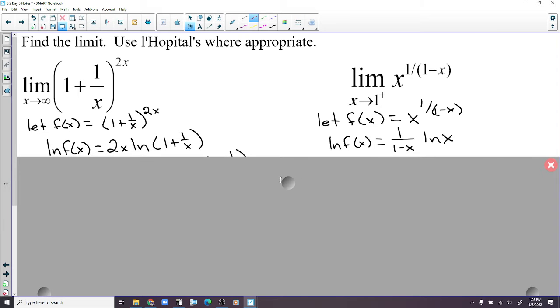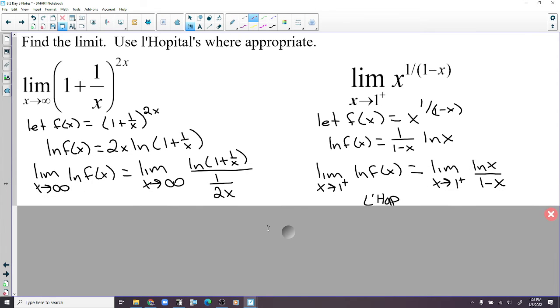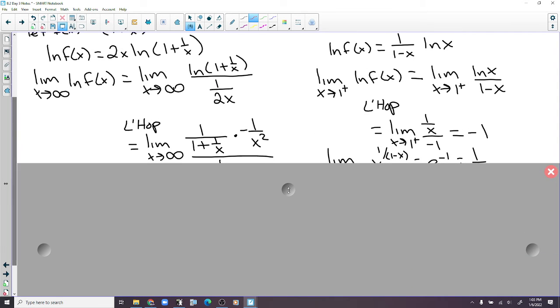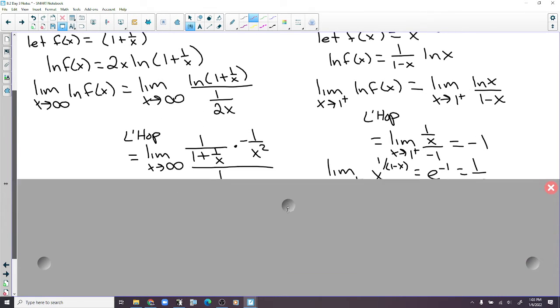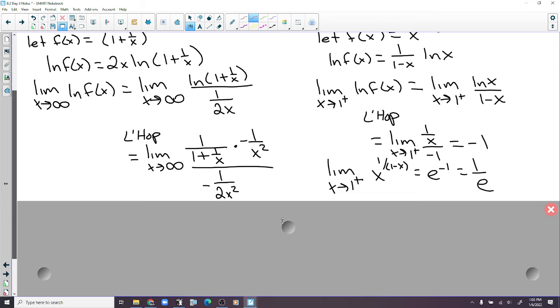Let f of x equal the function, take the natural log. That brings the power down. Take the limit, but instead of multiplying by 2x, we're going to divide by 1 over 2x. We'll use L'Hopital's because we have that indeterminate form. I didn't write that, which is 1 to infinity. There's the indeterminate form. Take derivatives. And the derivative of the bottom here, that's 1 half x to the negative 1. So we have negative 1 half x to the negative 2.